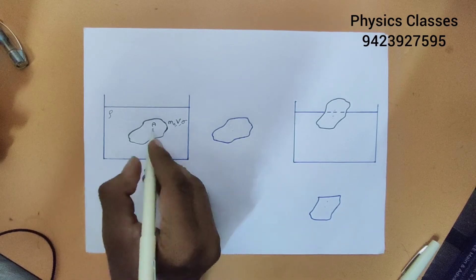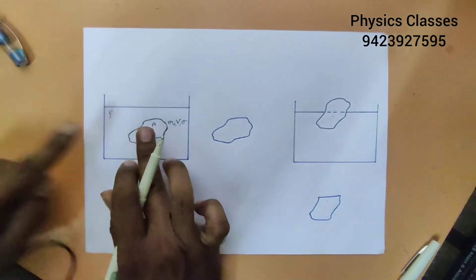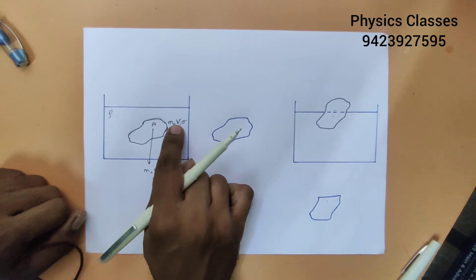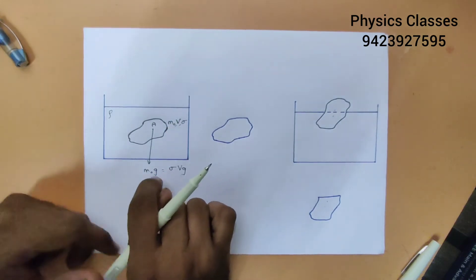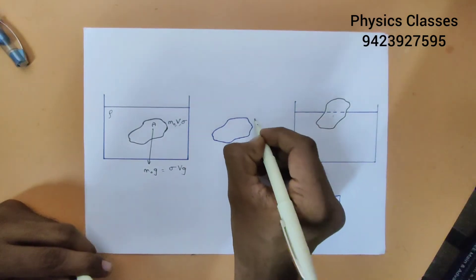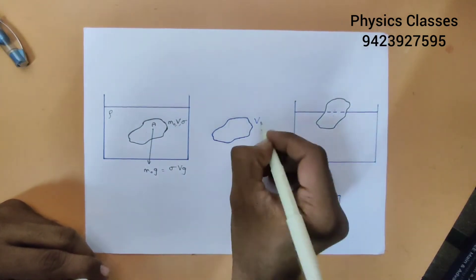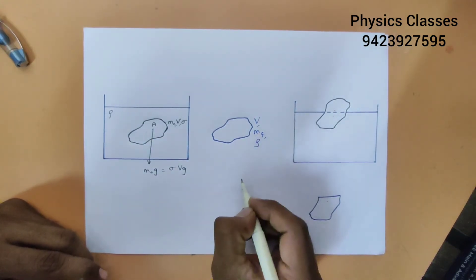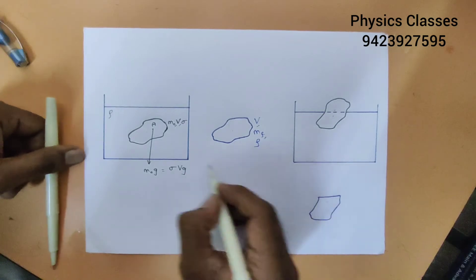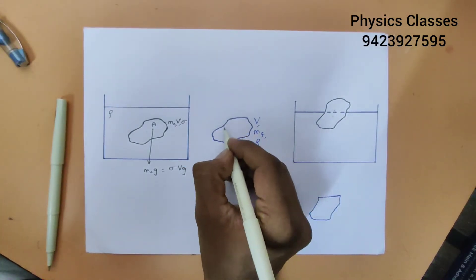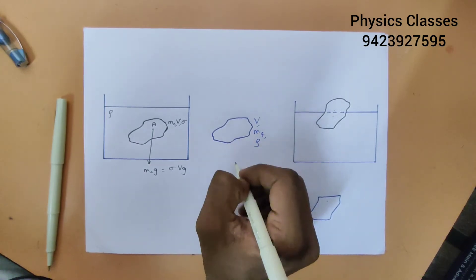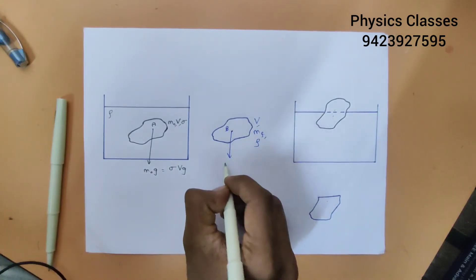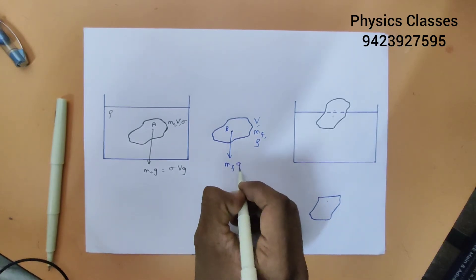Now how much of the surrounding liquid has this solid displaced or pushed aside? It has displaced the same volume V. I have shown this displaced fluid here — it will be of the same volume V as that of the solid object. Let Mf be the mass of this displaced fluid, and let rho be the density of the liquid. The gravitational force of this part of the liquid will act from its center of mass B in the downward direction, equal to Mf times G, which can be written as rho times V times G.